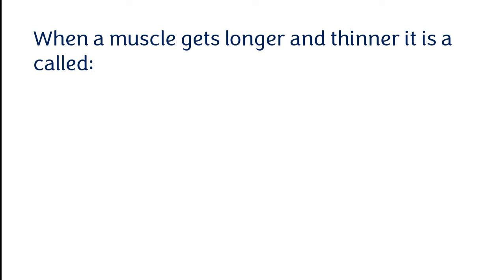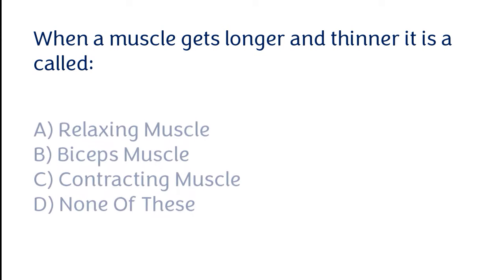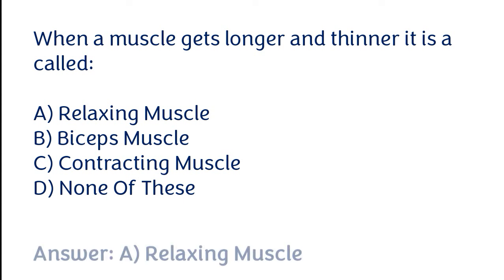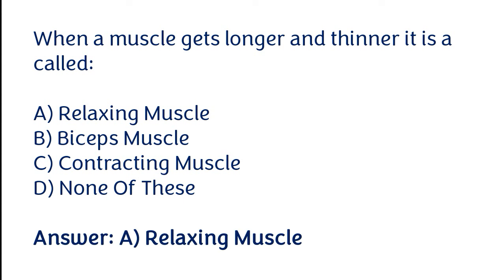When a muscle gets longer and thinner, it is called — Options: Relaxing muscle, Bicep muscle, Contracting muscle, or None of these. The correct answer is option A — when a muscle gets longer and thinner it is called a relaxing muscle.